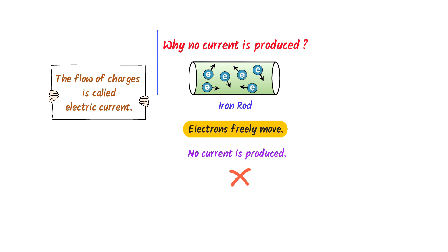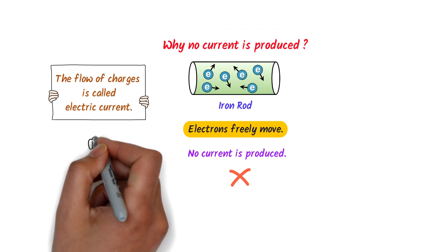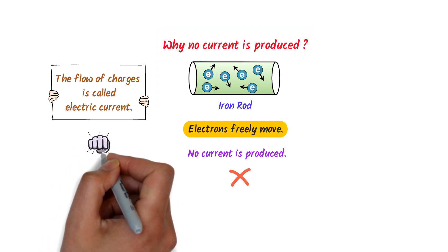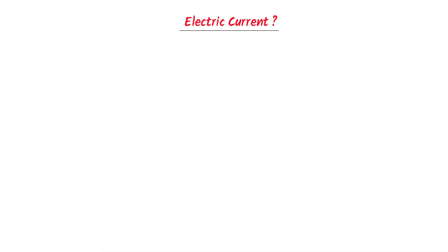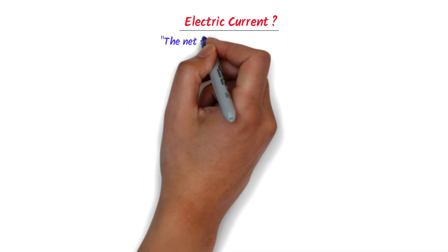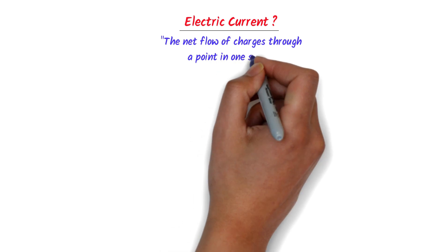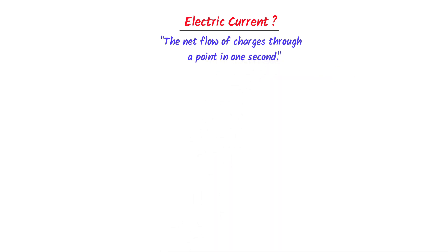You will be able to answer this question only if you know the basic concept of electric current. So let me teach you: what is electric current? The net flow of charges through a point in one second is called electric current.